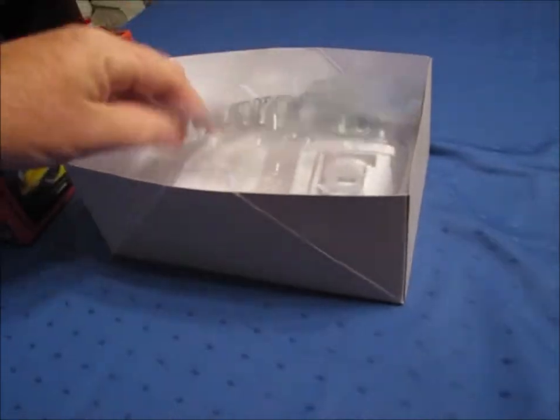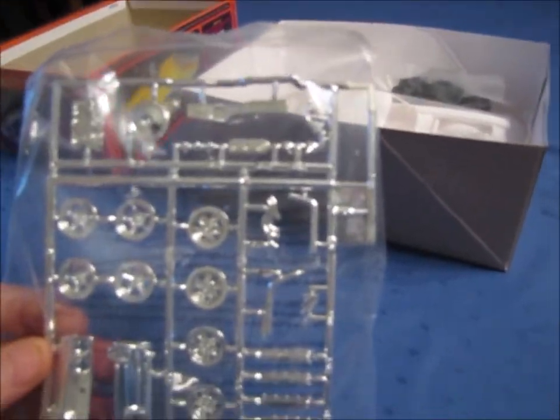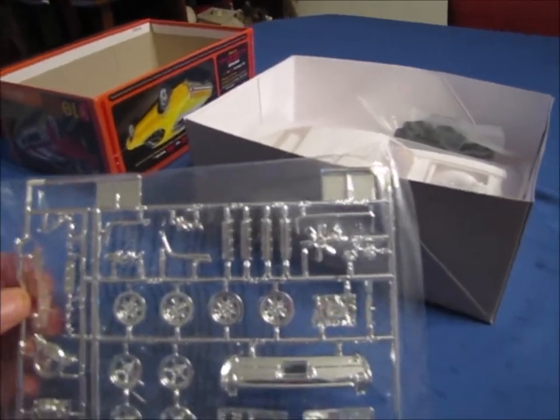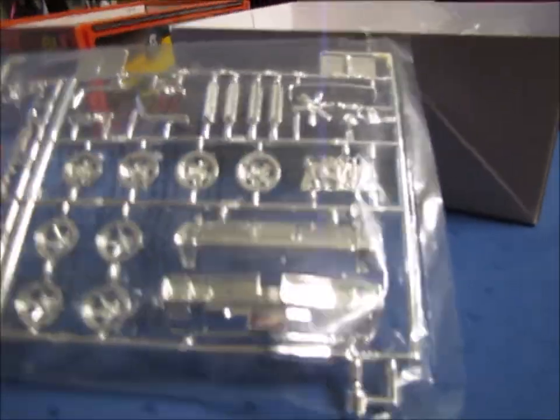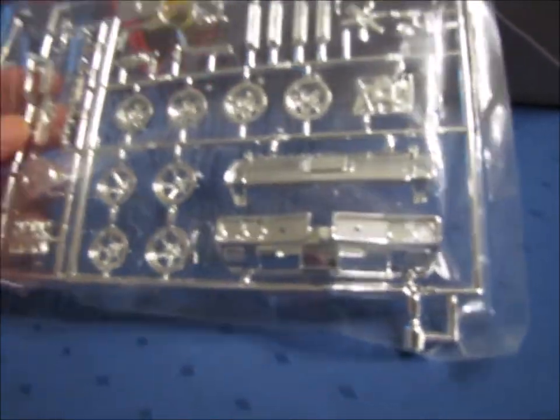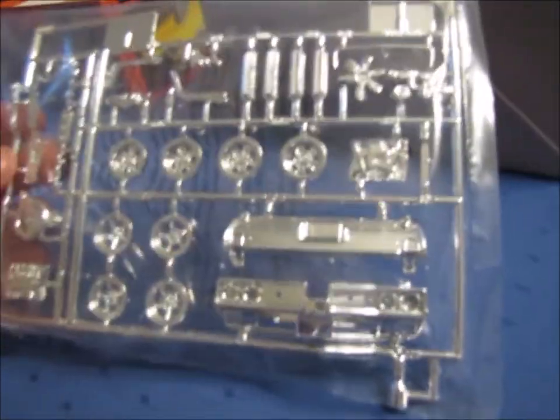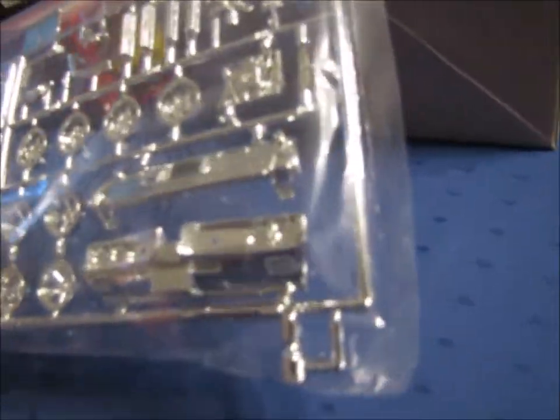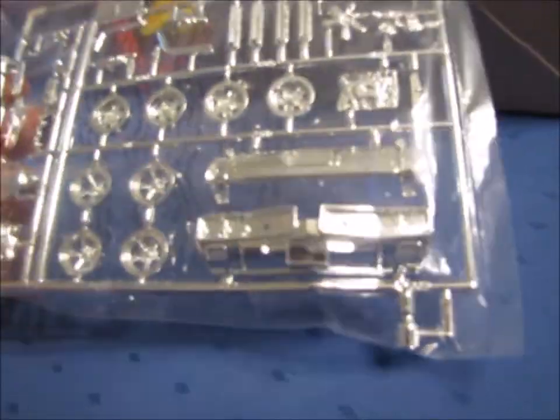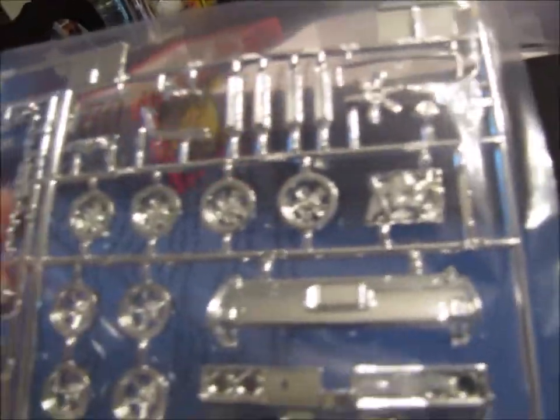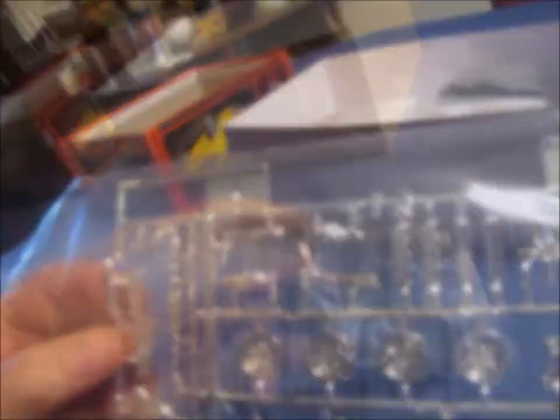First thing that we notice is we have our chrome parts tree and it's in a plastic bag to keep everything protected. Now, I do like the fact that the front bumper and the grill, it looks like the grill inserts are separate and the headlights are actually separate. They're not molded into it. So, I like that. The rear bumper looks like it's got the exhaust tips molded into the rear bumper. Not sure how I feel about that right now, but we'll see how it turns out later.